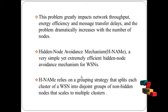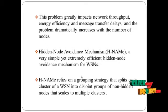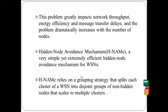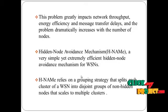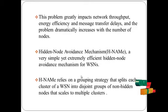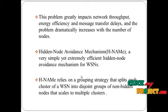Header node avoidance is an extremely efficient mechanism for wireless sensor networks. Here, the network forms a disjoint group of non-hidden nodes that scale to multiple clusters. If a hidden node does not occur, it will create a multi-cluster class to realize the grouping of split cluster files.